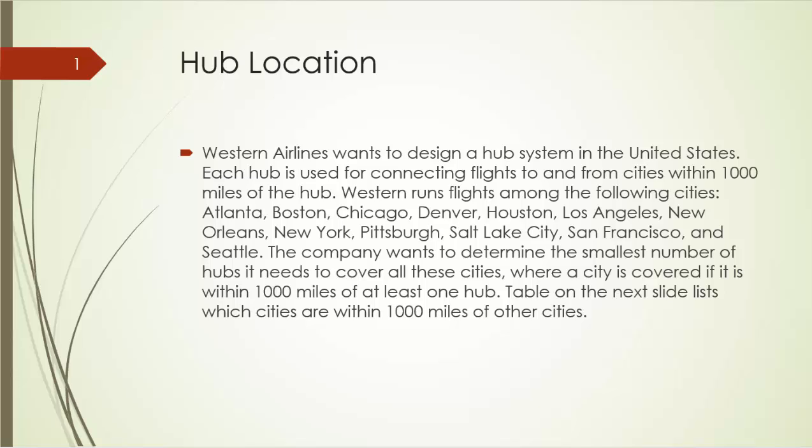Western Airlines flies among the following cities: Atlanta, Boston, Chicago, Denver, Houston, Los Angeles, New Orleans, New York, Pittsburgh, Salt Lake City, San Francisco, and Seattle. The company wants to determine the smallest number of hubs it needs to cover all these cities, where a city is covered if it is within 1,000 miles of at least one hub. The table on the next slide lists which cities are within 1,000 miles of other cities. Let's take a look.